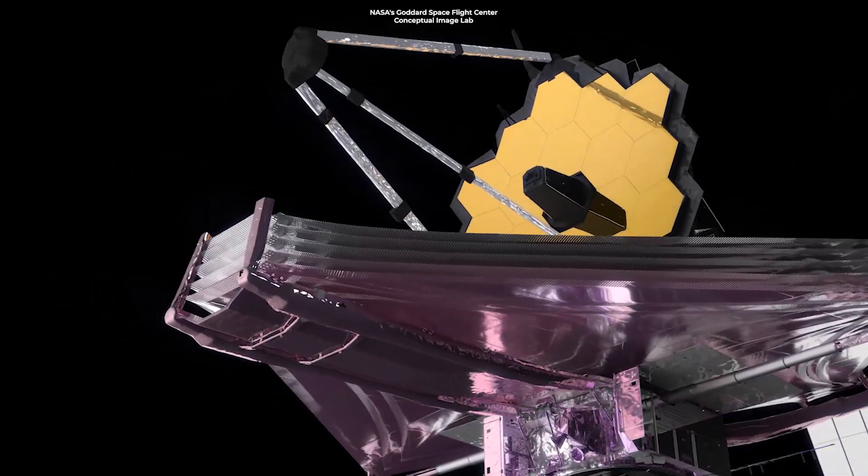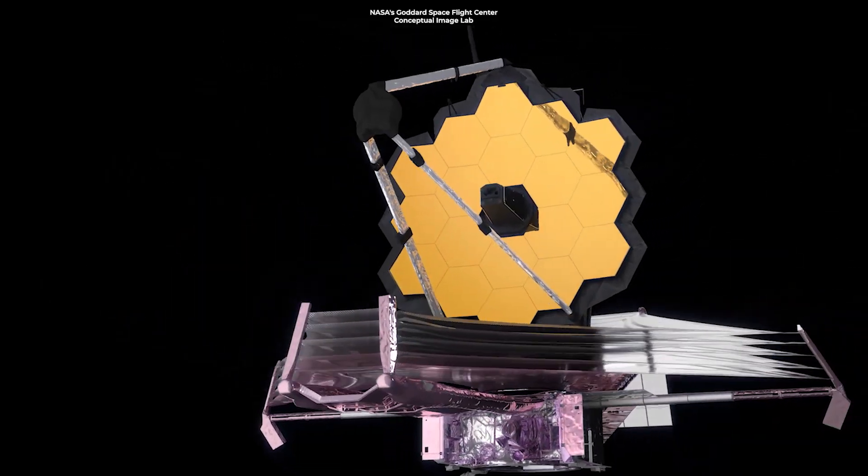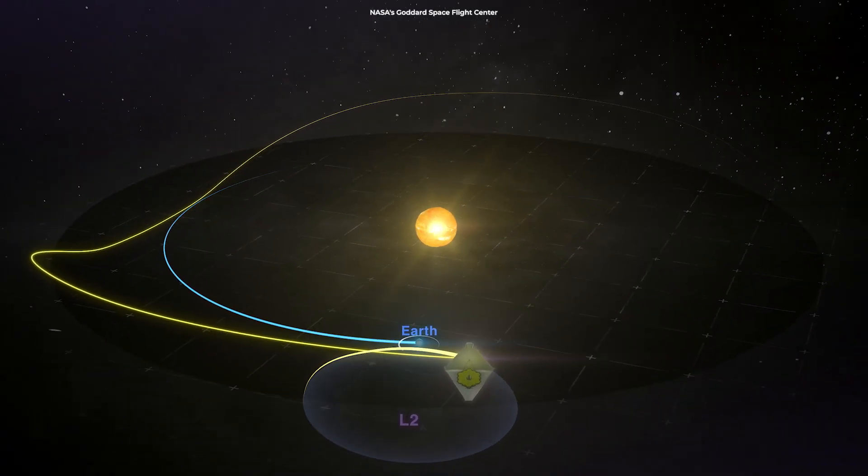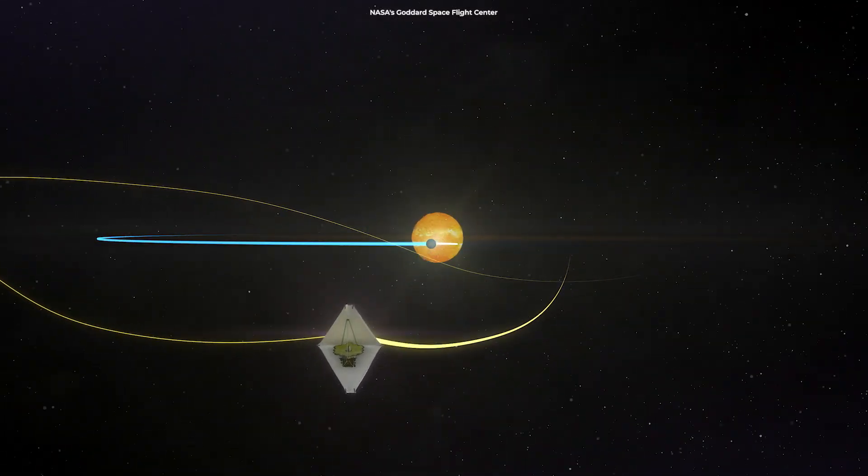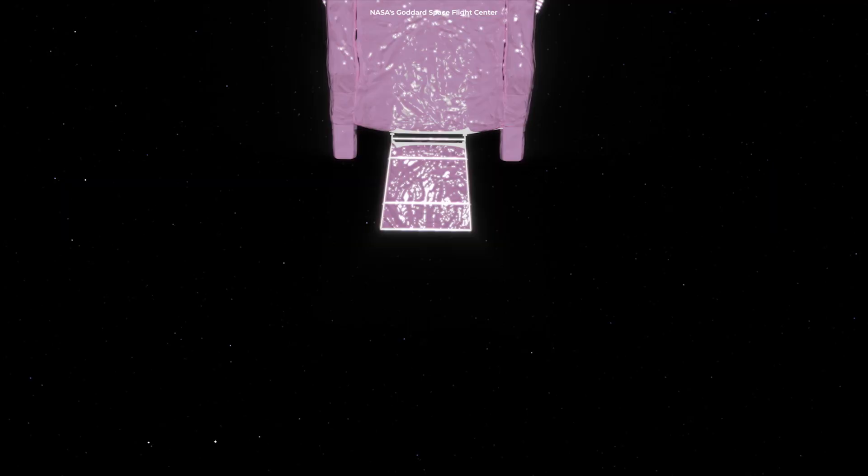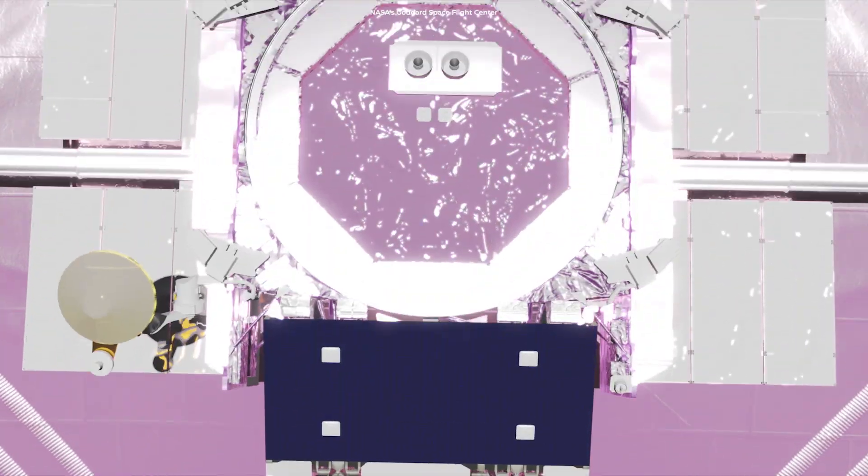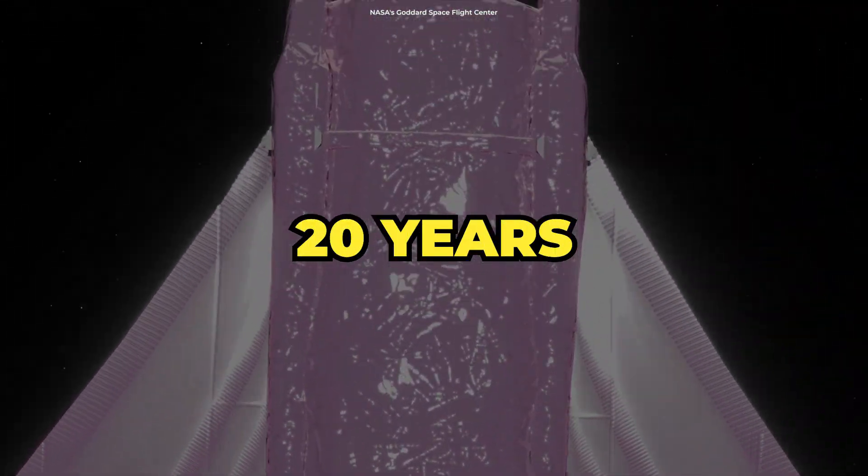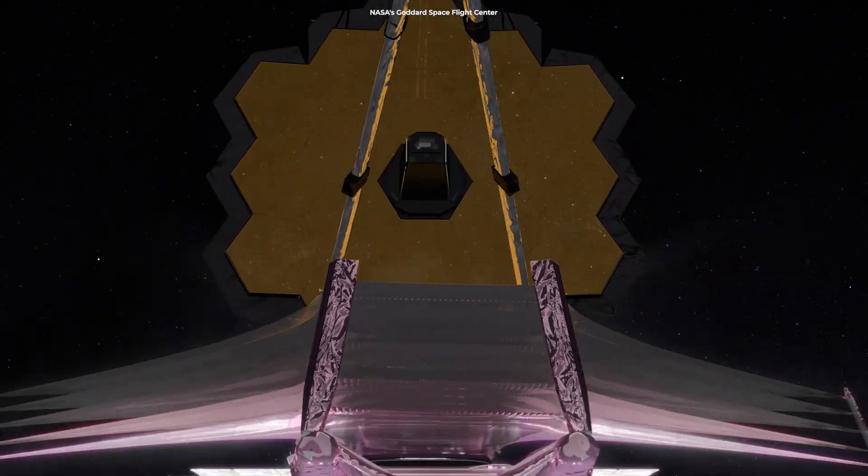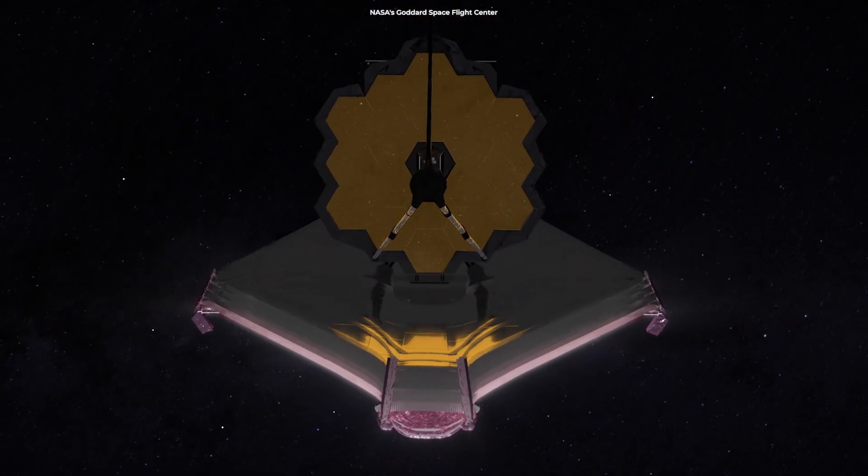The good news is that this is not a big deal and won't interrupt Webb's scientific goals, but the bad news has to do with the long-term effects of these micrometeoroids. Webb has enough fuel to do remarkable science for at least 20 years, but now scientists aren't sure how much micrometeoroid strikes will affect its operations.